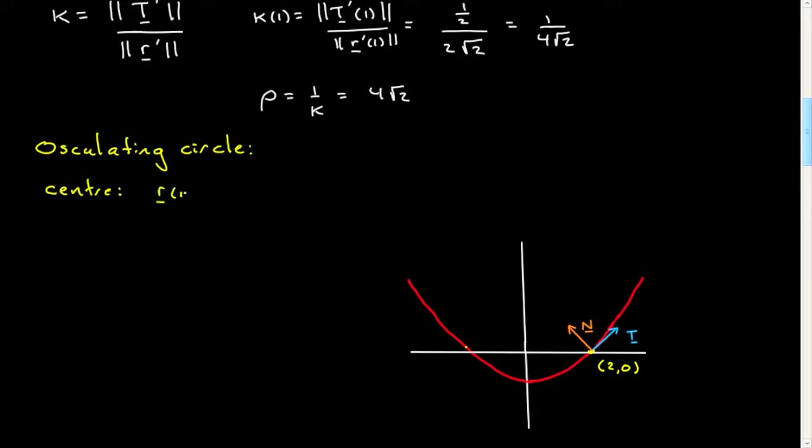So, the center will be at whatever point one is considering. In this case, it'll be R of 1. Plus, we move a distance, the radius of curvature, in the normal direction at that point.